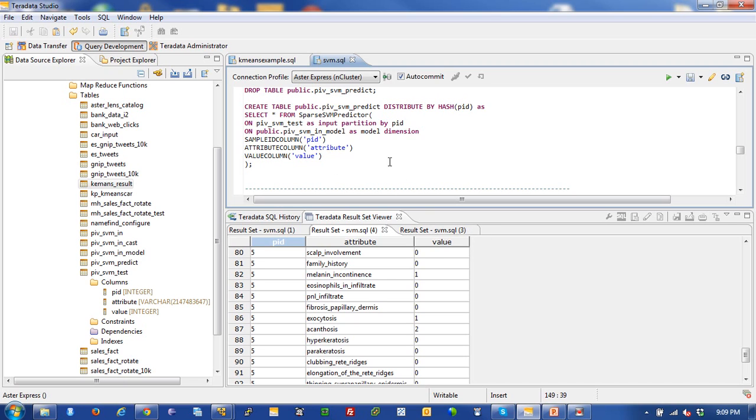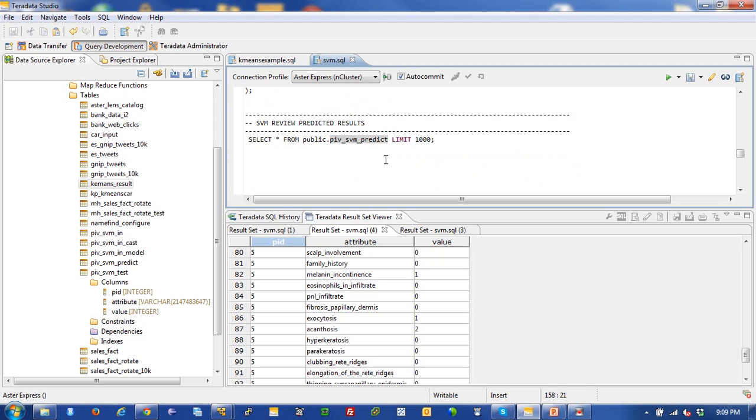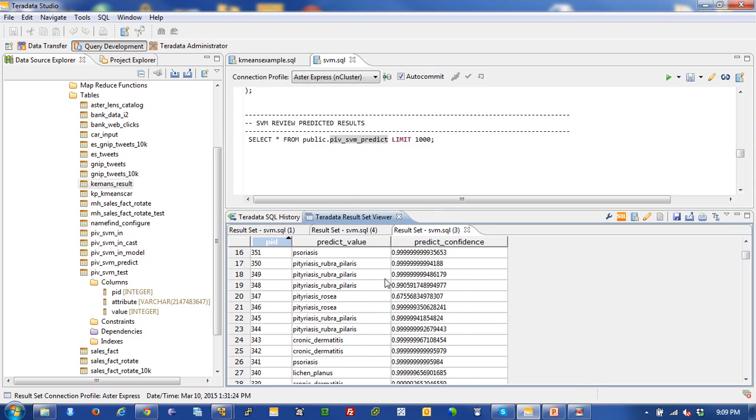So I'm bumping that up against and running that against the model with that input data from that test. And I'm going to create this table called PIV SVM predict. I come down here and I just basically run this particular query. And I look at the result set and there it is. I have just shown you how to do patient diagnosis prediction using Aster and support vector machines.